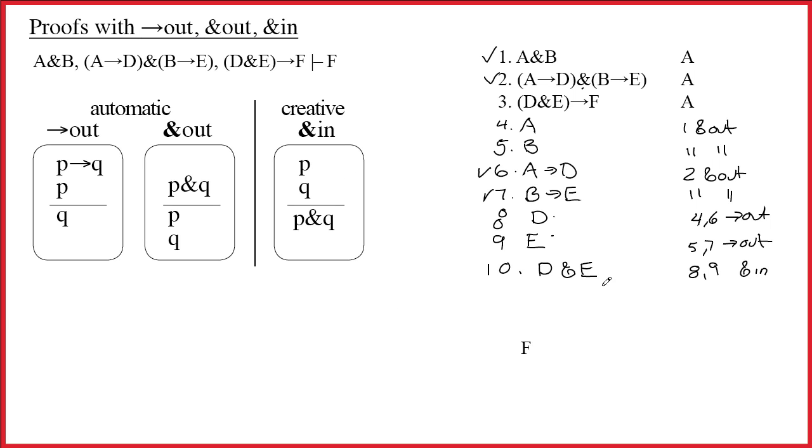We know exactly why we did this. It's so that we can go back and do the arrow out. Let me ask this question. Where did this D and E come from? Did it come from line three? And the answer is no, it definitely didn't. This D and E came from eight and nine. That's why we said eight and nine ampersand in.